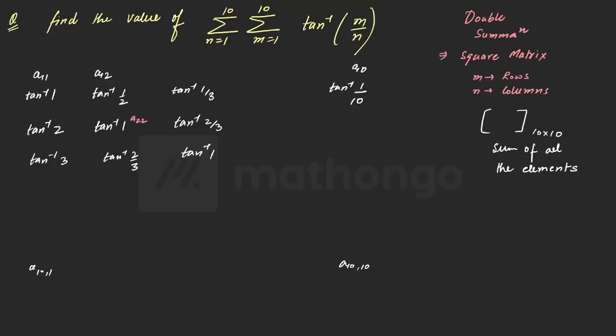Now, let's start finding the patterns. The pattern, first of all, which is very evident, is the diagonal one. Now if I see the diagonal elements here, they are all tan inverse 1 because m and n are equal, very obvious. So if I were to solve this particular problem, when m and n are equal, that means how many places will there be? 10 elements. 10 diagonal elements are there. So what will happen? It will be tan inverse 1.